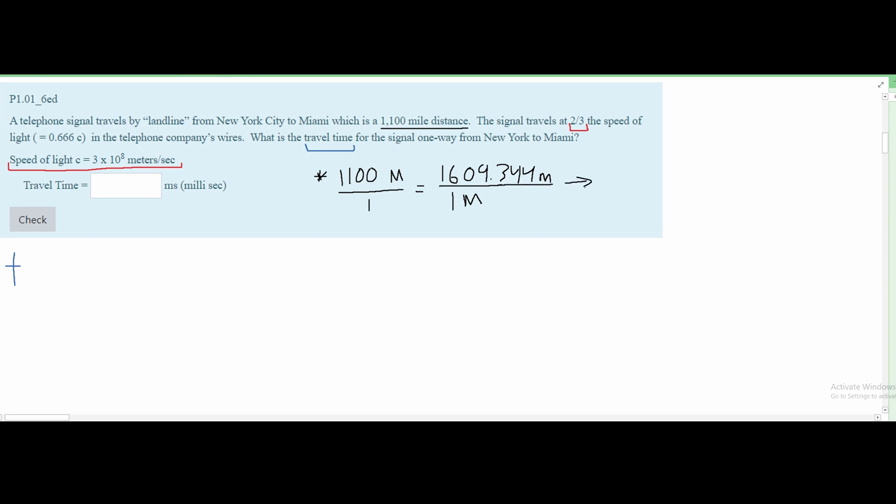After this, we can multiply this out and cancel out our miles so that we're just left with meters. After we plug this into our calculator, we get the value 1,770,278 meters. So this is the first part converted.